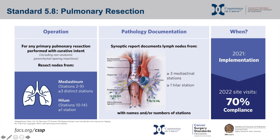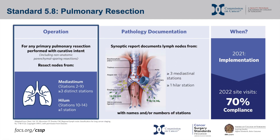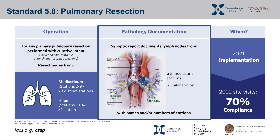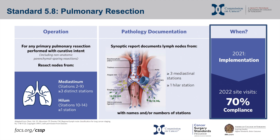This represents a brief overview of Standard 5.8, which states that any curative intent lung resection done for a primary pulmonary malignancy should include resection of nodes from at least three distinct mediastinal nodal stations and at least one hilar nodal station. Examination of these nodal stations must be documented in the Synoptic Pathology Report, with names and/or numbers of the stations clearly documented. This standard should be implemented in 2021, with compliance checked during the 2022 site visit, with an expectation for 70% compliance.